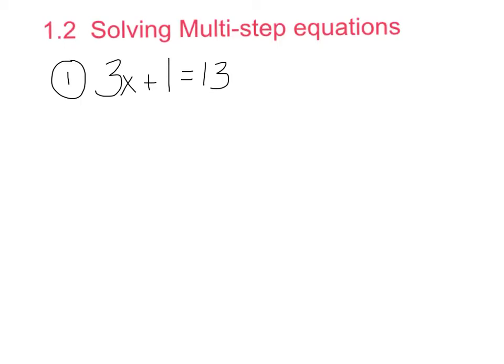The first thing you always get rid of is addition or subtraction. In this problem, we have an addition of 1. The opposite of adding 1 is subtracting 1, so you're going to subtract 1 on both sides. That would leave us with 3x equals 12.